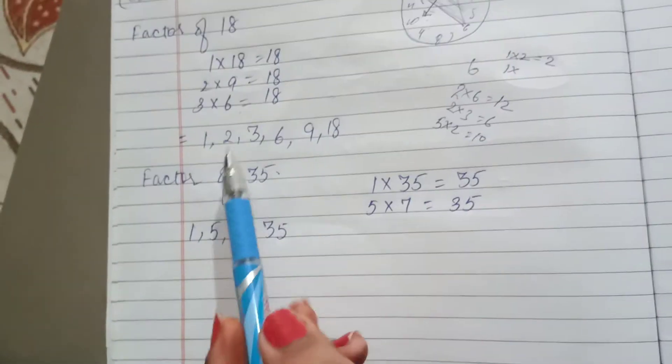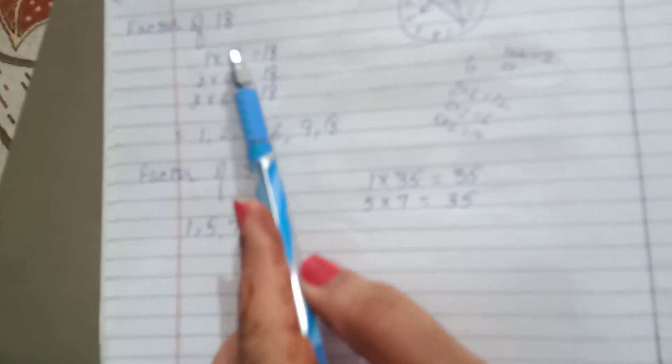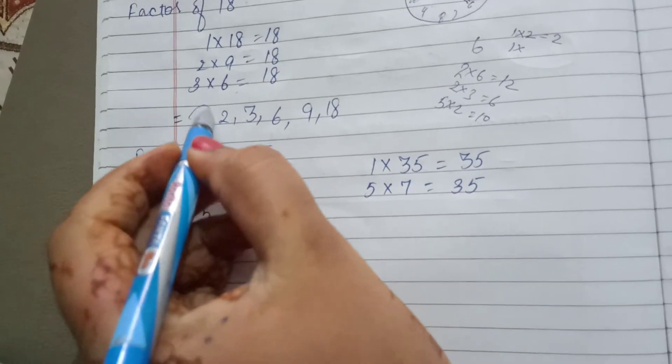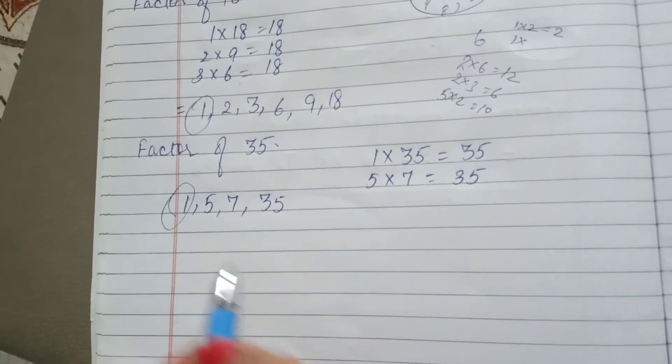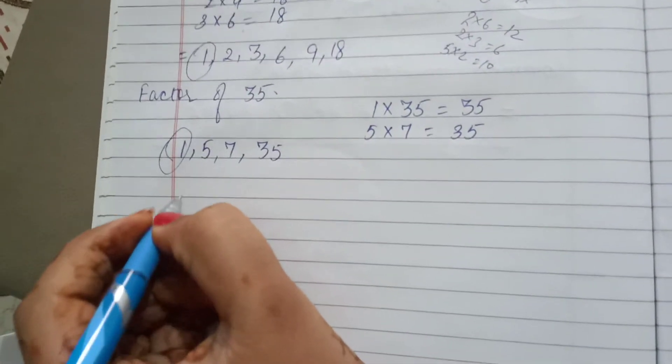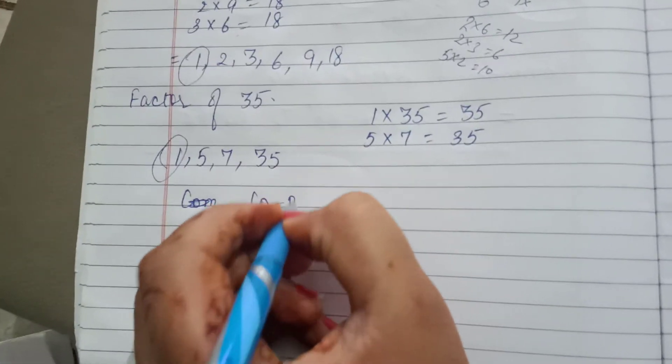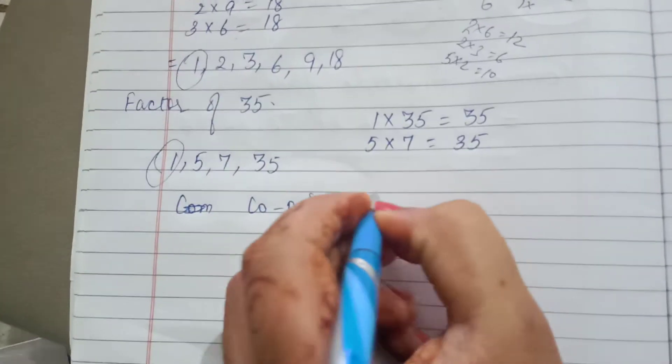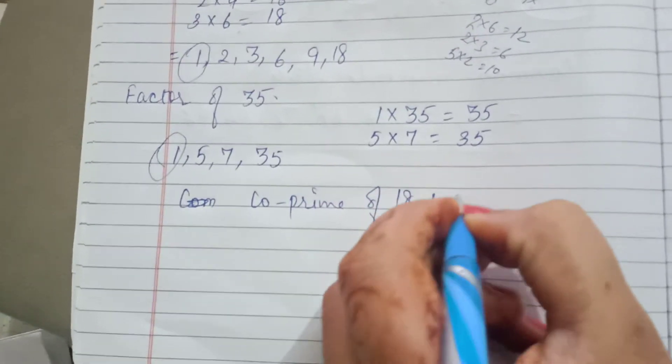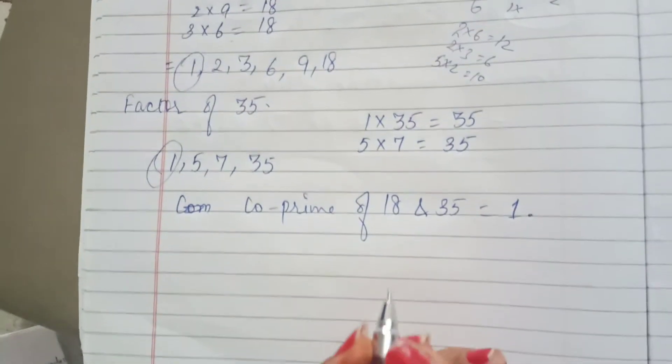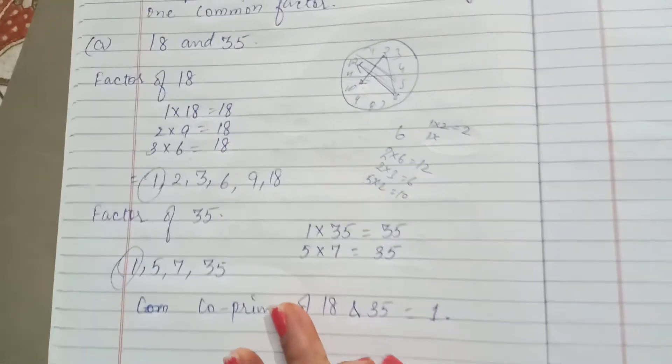In both, you have to check factor of 18 and factor of 35. Only one common factor, that is 1. One common factor means co-prime. So 18 and 35 are co-prime. This question is done.